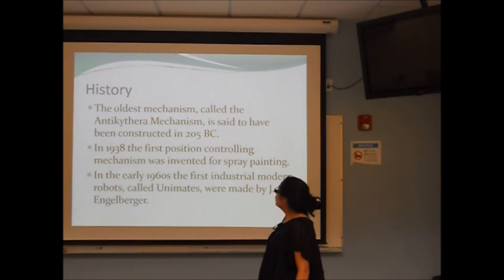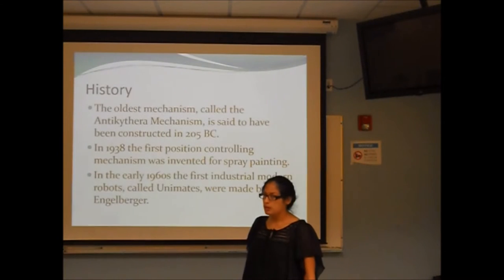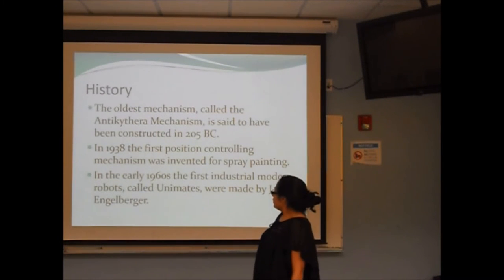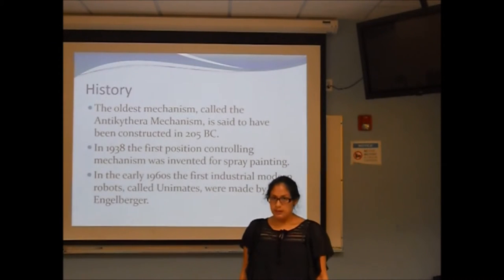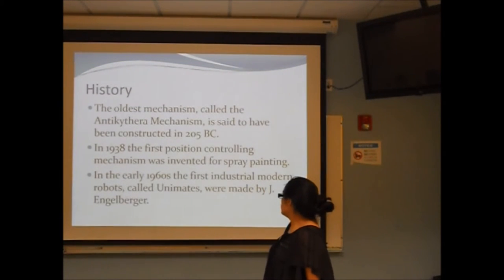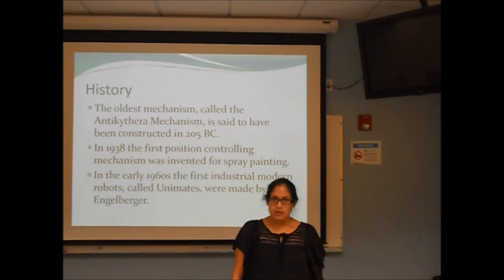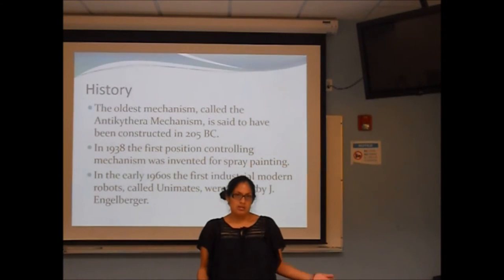The history: The oldest mechanism, called the Antikythera Mechanism, is said to have been constructed in 205 BC. In 1938, the first position-controlling mechanism was invented for spray painting. And in the 1960s, the first industrial robots, called Unimates, were developed.